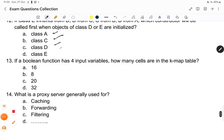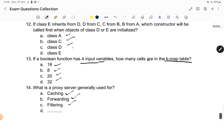Thirteenth question was if a boolean function has four input variables how many cells are in kmap table? 16, 8, 20, 32. And the last question what is the proxy server generally used for? Caching, forwarding, filtering, and one option it is not given.